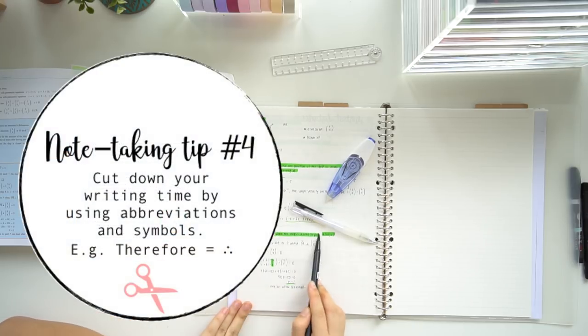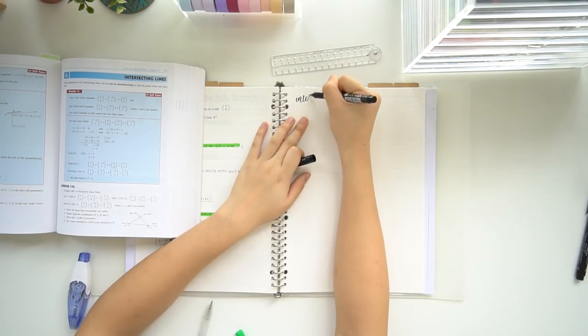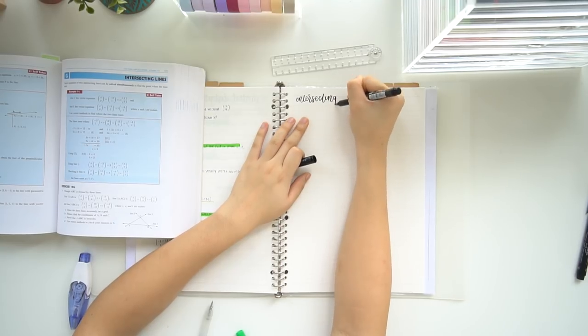So in saying that, it's also good to use symbols, abbreviated words, and also don't write full sentences, because it's just going to take a lot of time.